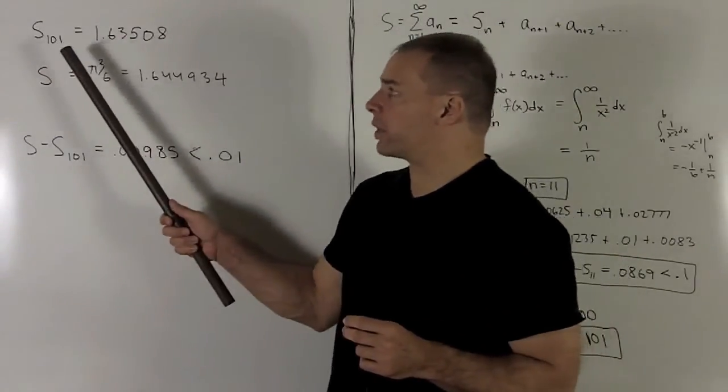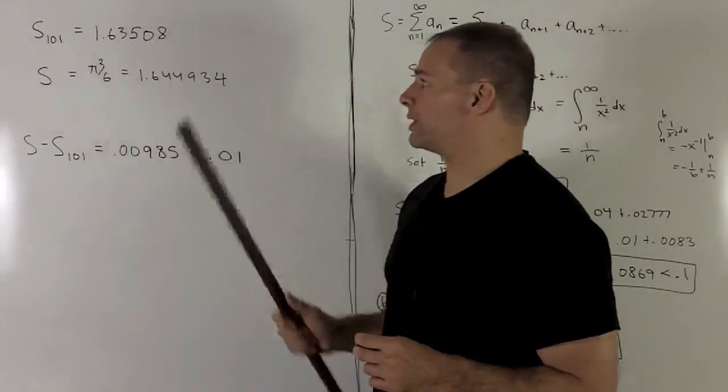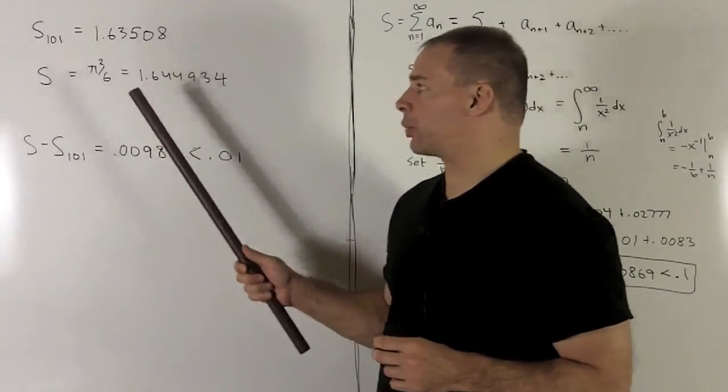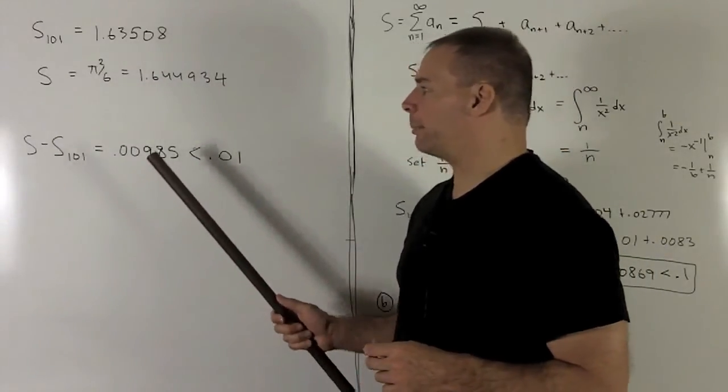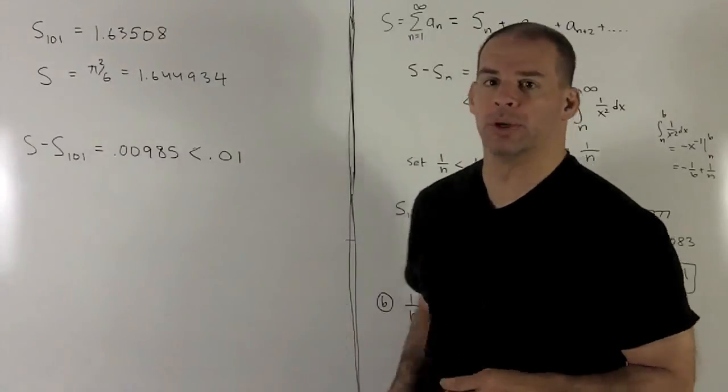So our 101st partial sum, the first 101 terms, we're going to add up to 1.635. Our sum, remember, is pi squared over 6, gives us 1.6449. If I take their difference, I get 0.00985, which is definitely less than 0.01.